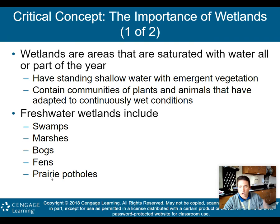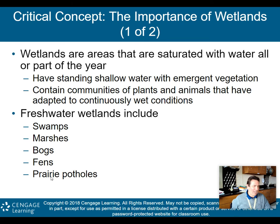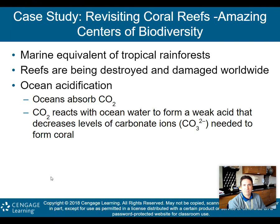Freshwater wetlands include swamps, marshes, bogs, fens, and prairie potholes. Saltwater wetlands include estuaries, mangrove swamps, and coastal marshes. Both freshwater and saltwater wetlands are going to provide many ecosystem services for us.